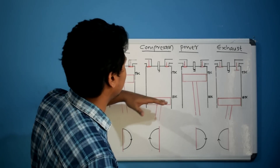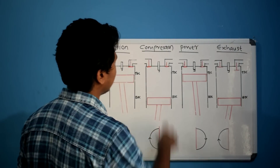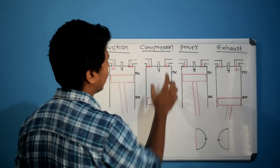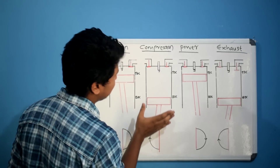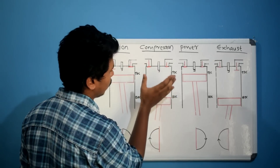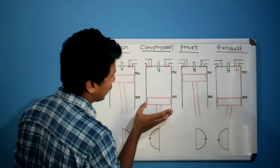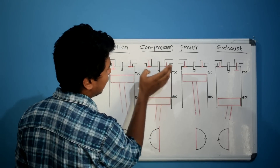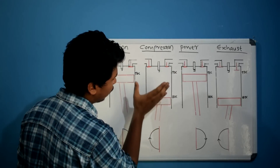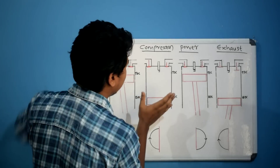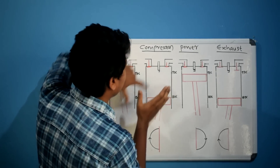The next stroke is the compression stroke. When the compression stroke begins, both valves are closed and the piston is at BDC. The piston moves from BDC up to TDC. As the piston compresses the mixture, the pressure and temperature will increase.